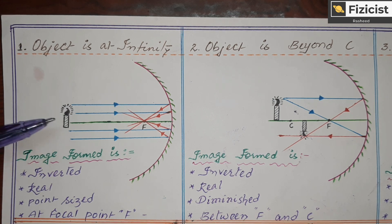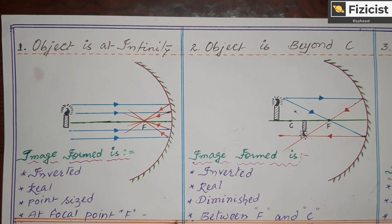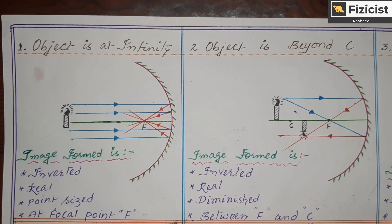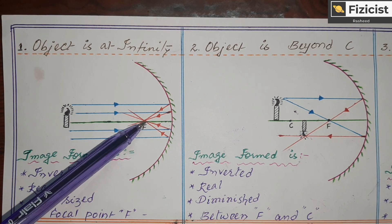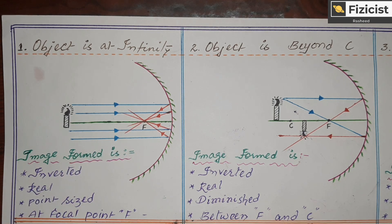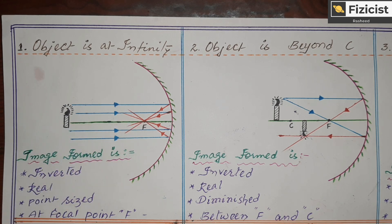When an object is kept at infinite distance, it always emits parallel light rays — light rays which are parallel to each other and parallel to the principal axis. These parallel light rays travel towards the concave mirror. When they strike the concave mirror, they reflect back and all the light rays are focused onto a single point. All the light rays meet at a single point called the focus or focal point, so the image is formed at the focal point.